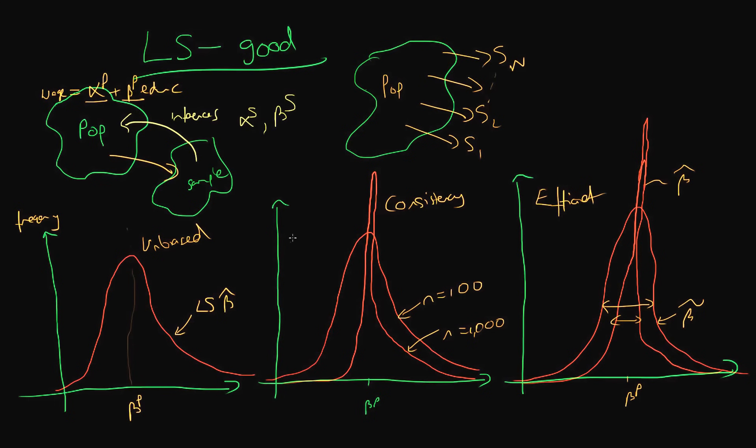So just in summing up these are three properties which we would like any sort of estimator, any technique which we apply to sample data to have. And it actually turns out that under a set of conditions which we call the Gauss-Markov conditions or Gauss-Markov assumptions after the mathematicians Karl Friedrich Gauss and Andrei Markov, least squares estimators are actually something which we refer to as BLUE. And I'm going to just explain what this means.